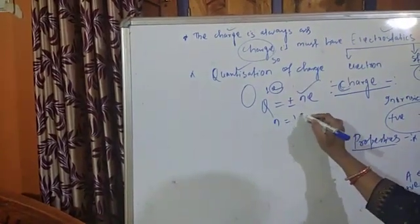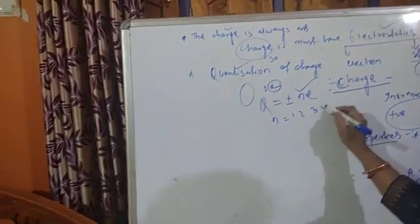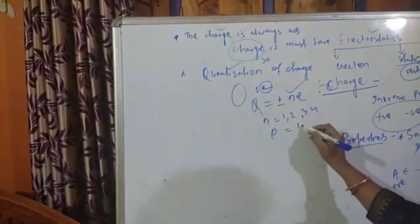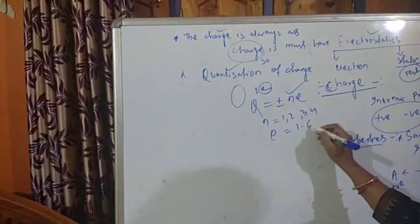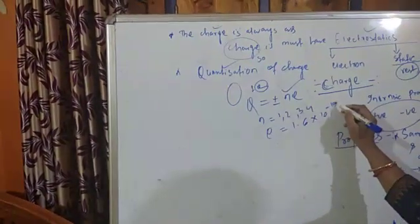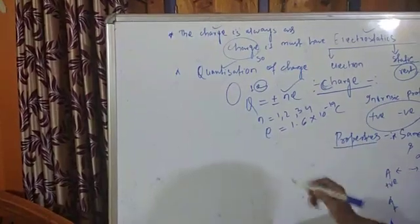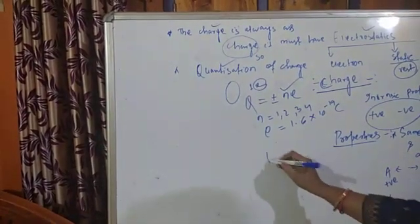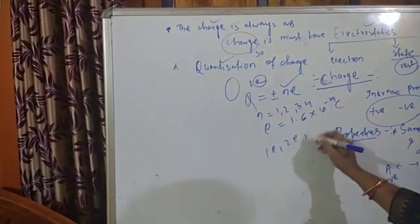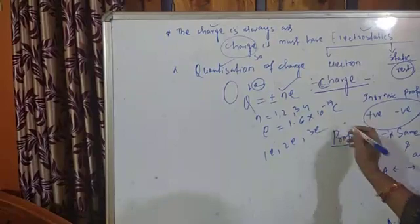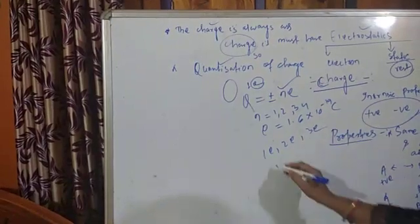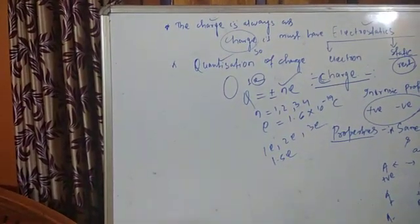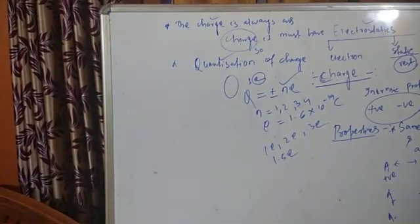The total charge of a body Q equals plus or minus Ne, where N is any integer 1, 2, 3, 4, etc., and e is the charge of the electron, 1.6 × 10⁻¹⁹ coulombs. We can remove 1 electron, 2 electrons, or 3 electrons from a body, but we cannot remove 1.5 electrons from a body because charge is available in packets. That is the basic property of quantization of charge.